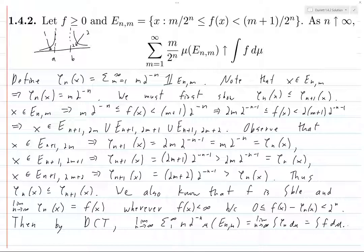Could you do this without applying dominated convergence? Probably, but that solution would just follow the proof of dominated convergence anyway. This is a standard application of dominated convergence, and I don't see why you'd want to avoid it. If your teacher wants you to use only techniques from this section, you already have everything needed to prove dominated convergence — so just prove it and apply it. This is a perfectly good solution, and we're done.